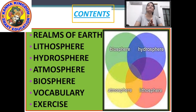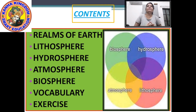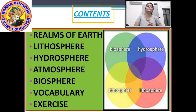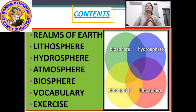In Part 1 we saw the components of the Earth — the spheres of the Earth — divided into 4 parts: lithosphere, hydrosphere, atmosphere, and biosphere. Litho means land or rock, hydro means water, atmos means air, and bio means life.